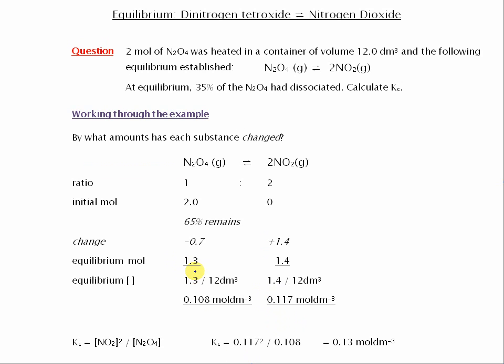Now we've worked out the equilibrium moles. We can work out the equilibrium concentrations by dividing by 12, because that's the volume. So here are the concentrations. Here's our expression for Kc. So we can put in the values for NO2 and then for N2O4. And there we come out with our answer.